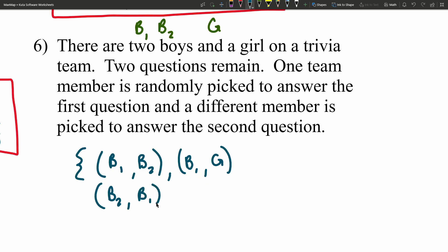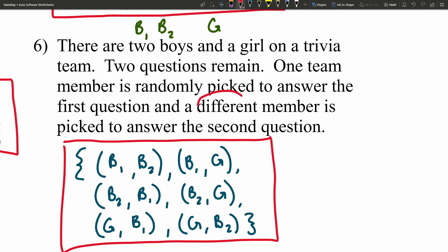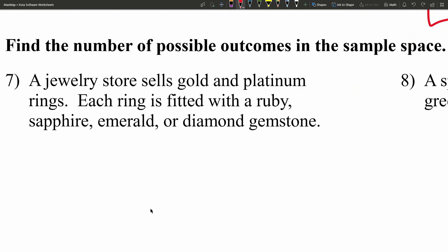If the girl answers first, then either b1 or b2 answers second. That gives us six different combinations. The keyword here was 'different members' — without that restriction, we could have added b1-b1, b2-b2, and girl-girl, giving three more options, but the problem requires different members.